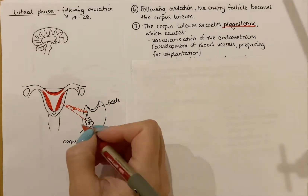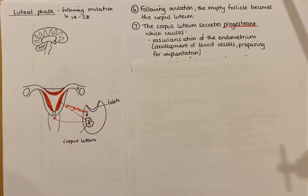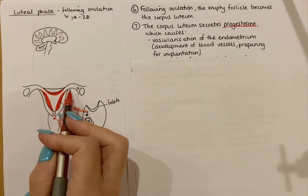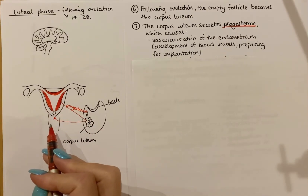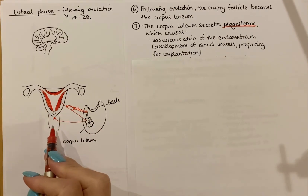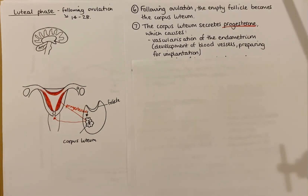Progesterone also targets the cervix. Oestrogen causes the cervix to thin its mucus so that sperm can enter through it and swim up towards the oviduct. But now the female is preparing for pregnancy and implantation, so you do not want any more sperm to swim up through the cervix. Therefore, progesterone causes the cervical mucus to thicken — that is the second function of progesterone.